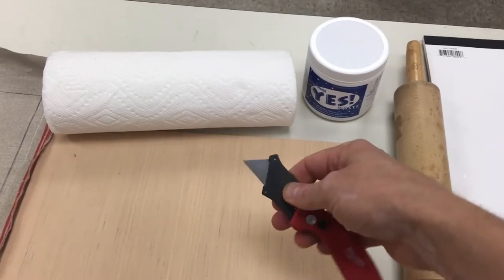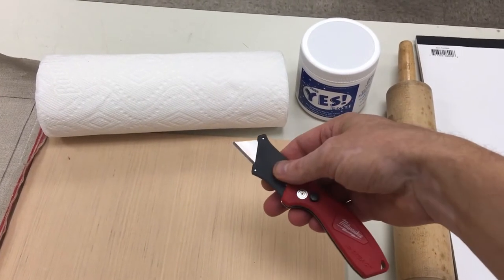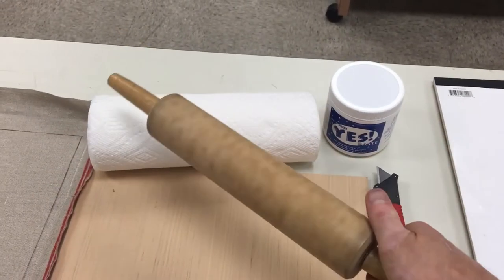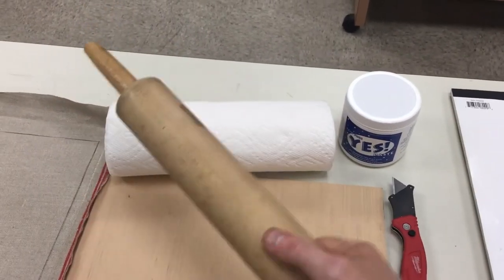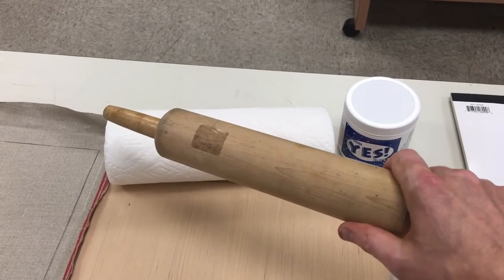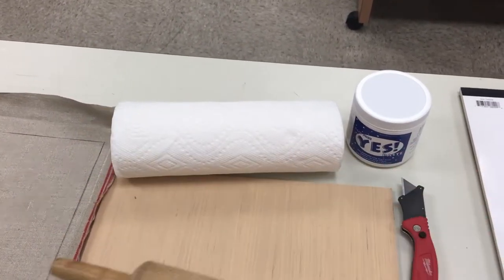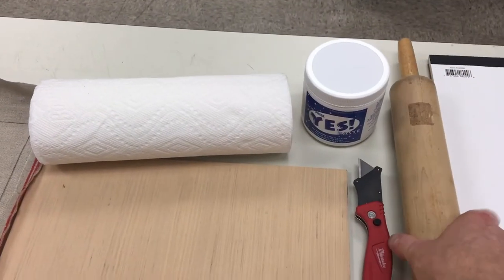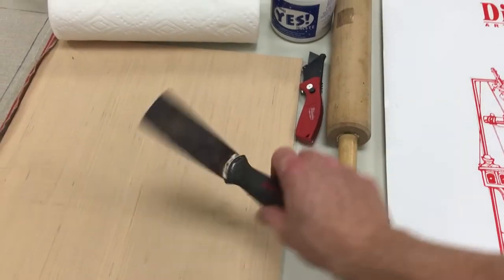You'll need a razor, exacto knife, or utility blade for trimming off the excess canvas. This is a rolling pin. You don't really need a rolling pin but something cylindrical even just like a wooden rod where you can roll the canvas onto the panel and really get that glue pressed down in there. I also have a couple putty knives here.